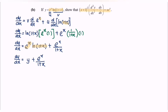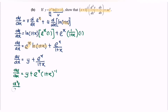Now we proceed to find the second derivative. I will rewrite the first derivative as dy/dx equals y plus eˣ times (1 plus x) to the power of negative 1. This avoids using the quotient rule. Now I'll apply the product rule to differentiate the eˣ times (1 plus x)^(−1) term. Differentiating dy/dx, we get the second derivative. Let u equal eˣ and v equal (1 plus x) to the power of negative 1.